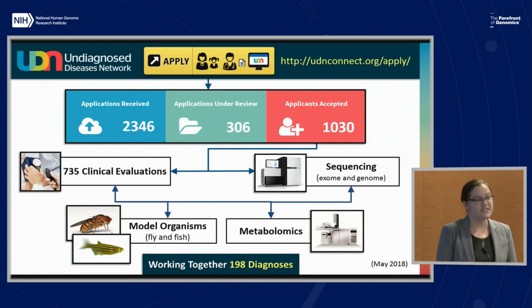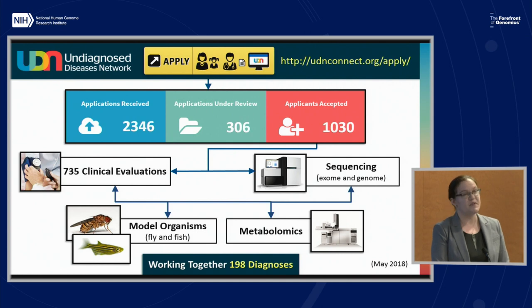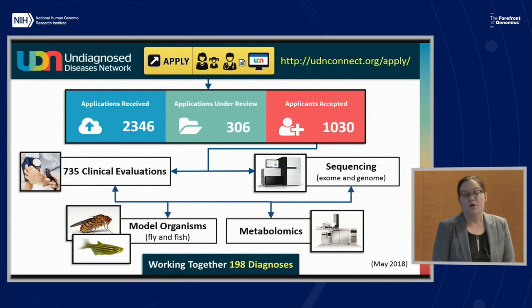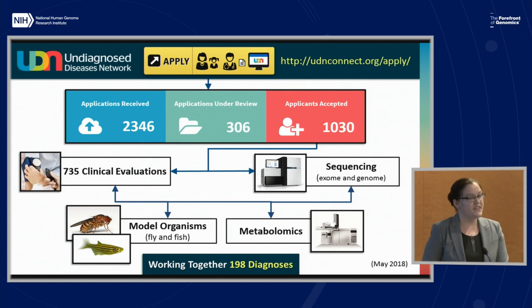To date, we've had about 700 clinical evaluations and approximately the same number of individuals who have received sequencing. We have enough sequencing capacity to sequence either trios or quads for all accepted participants. Once an individual has received their clinical evaluations and sequencing, the Metabolomics Facility can do untargeted metabolomics to find additional hypotheses, and the Model Organisms Screening Center can follow up in fly and fish models to determine if a new variant has a phenotype. Working together, all these components have so far diagnosed just under 200 participants.